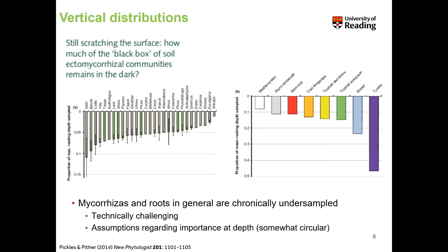Mycorrhizas and roots in general are chronically under-sampled. It's technically challenging to look at the roots of different plants because you have to dig them up. Some of the assumptions about the importance of looking at depth become somewhat circular when people argue that mycorrhizas are mostly distributed in upper soil layers, while most studies really only focus on upper soil layers. So there are some interesting things to think about regarding spatial and vertical distributions at different scales.